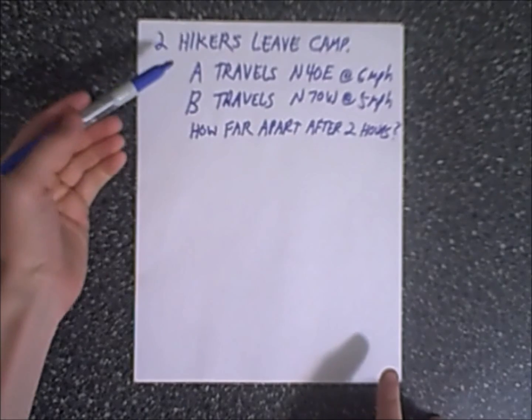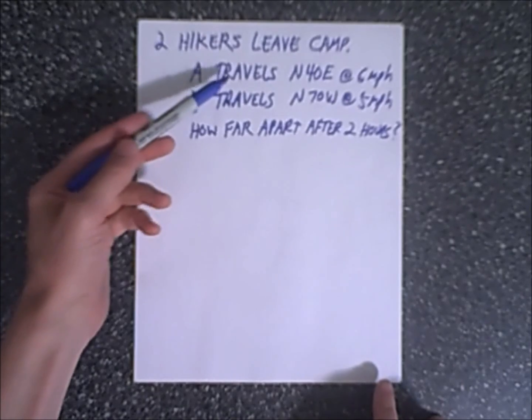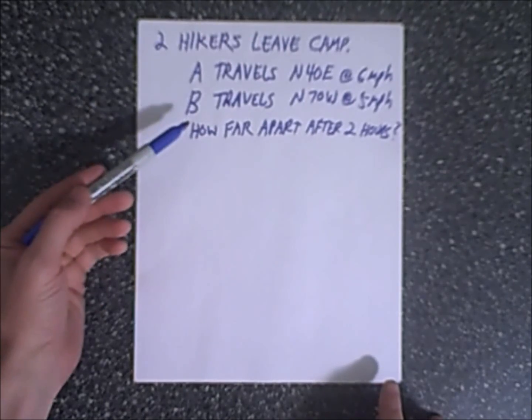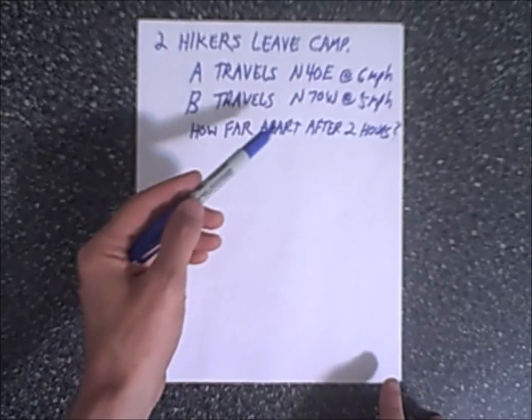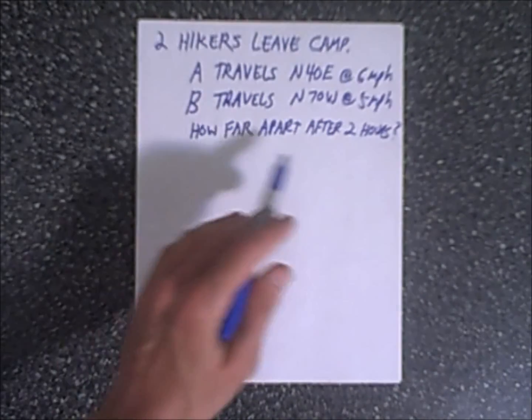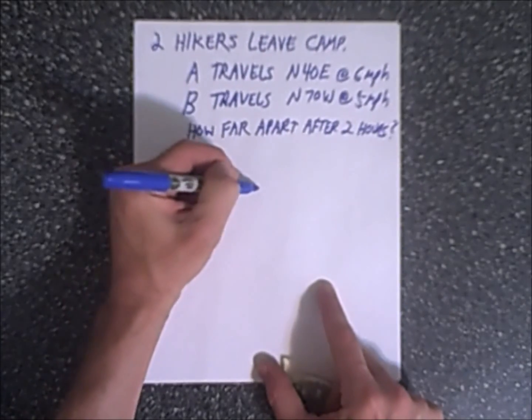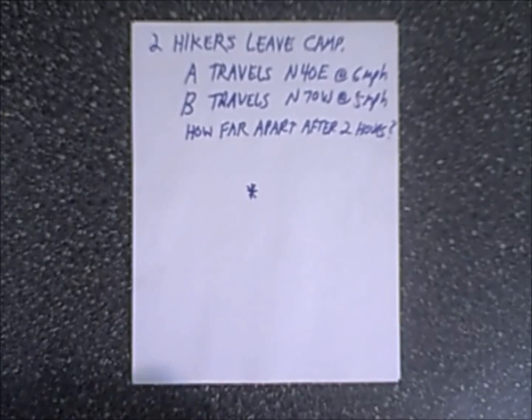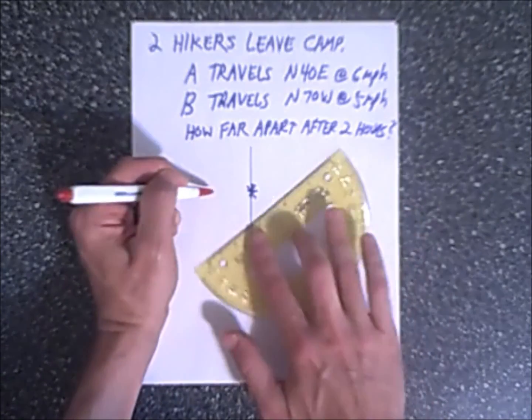We have two hikers in a camp. They both leave in different directions. Hiker A, that's his or her name, is traveling north 40 east at six miles per hour, and hiker B is traveling in a different direction, north 70 west, is the compass setting or direction, at five miles per hour. How far apart are they after two hours? So like most word problems, we like to draw a quick sketch. Let's make our little camp here. Here's the campsite.